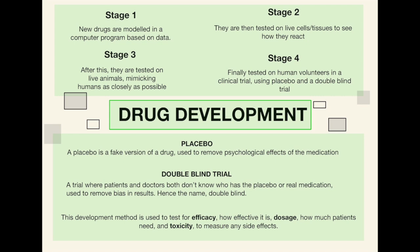When we do this drug development trial, we're looking for three things: efficacy, dosage, and toxicity. Efficacy is how effective the medication is; dosage is how much patients need to take; and toxicity measures any side effects that we might want to avoid, or could go back and adjust to reduce those side effects.